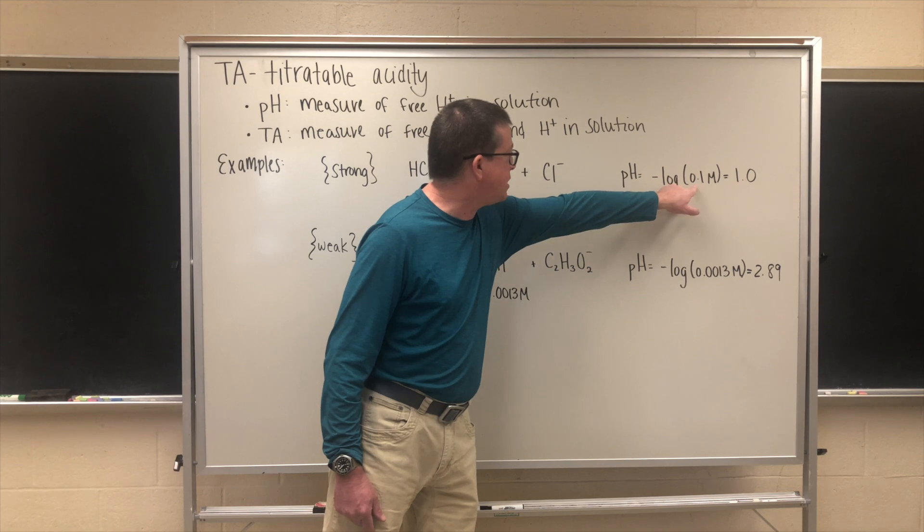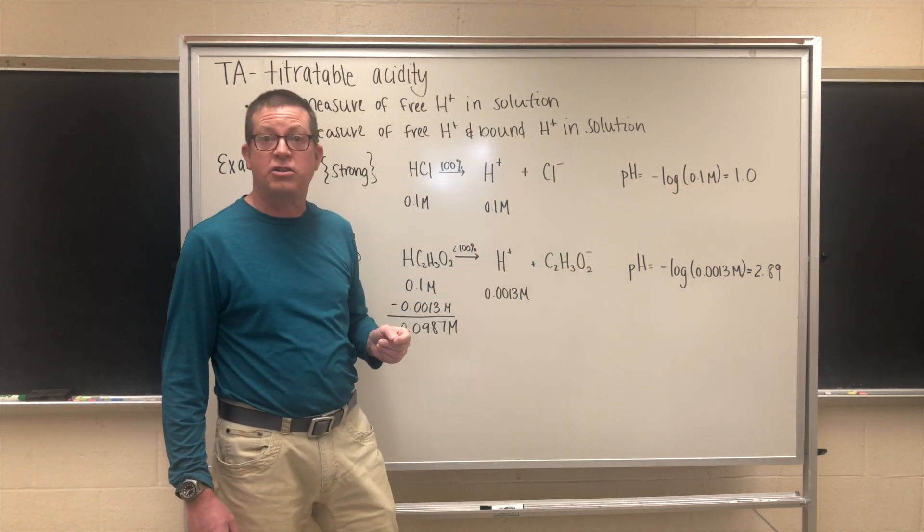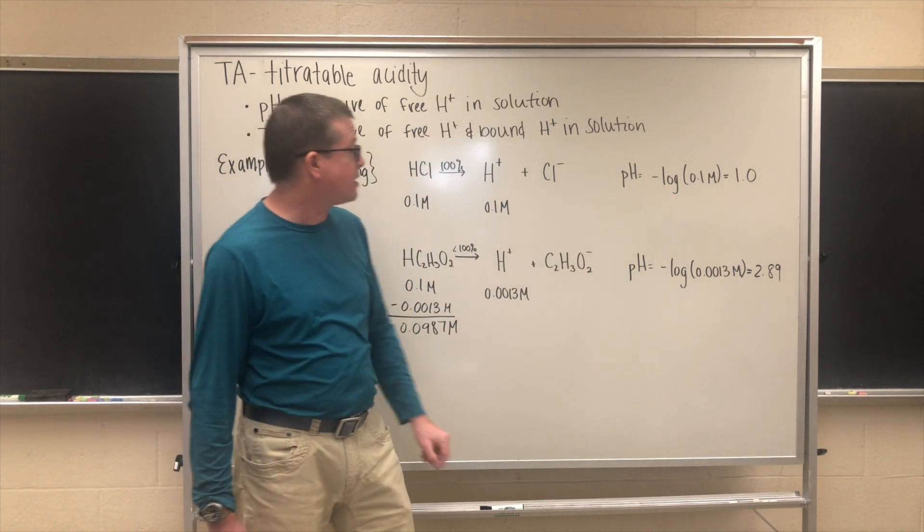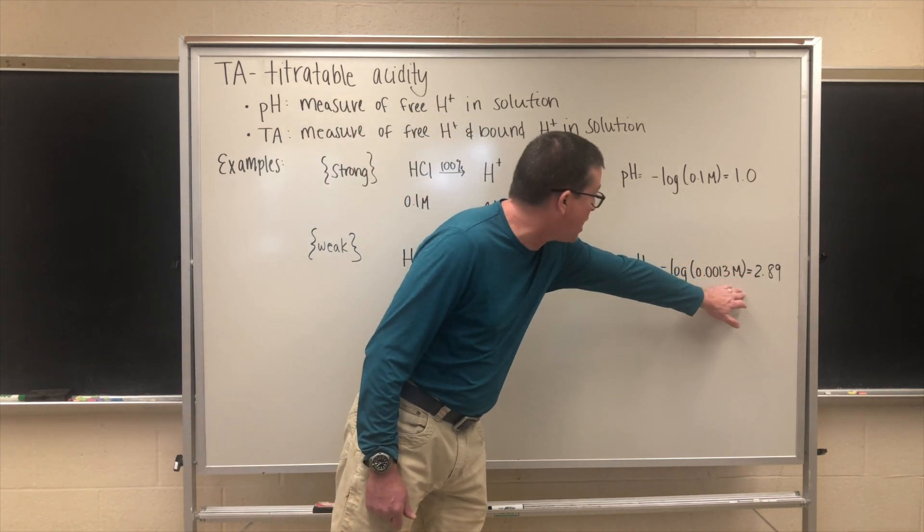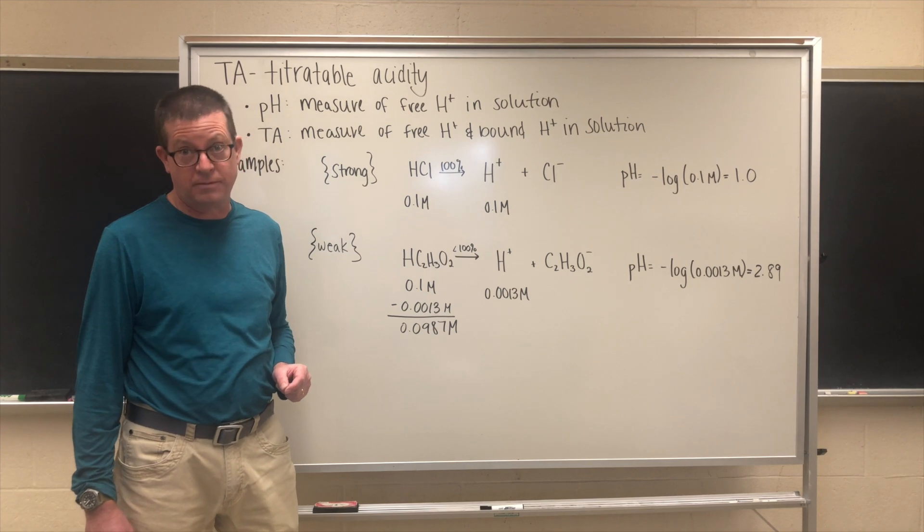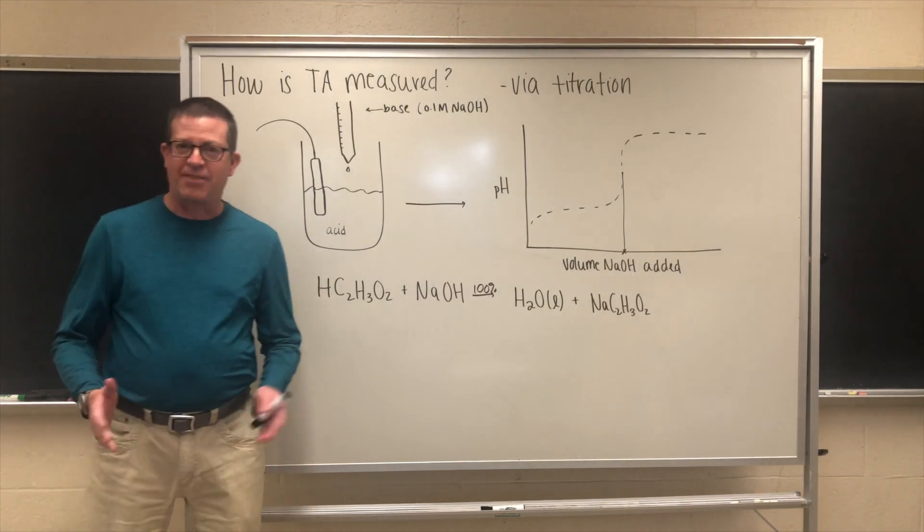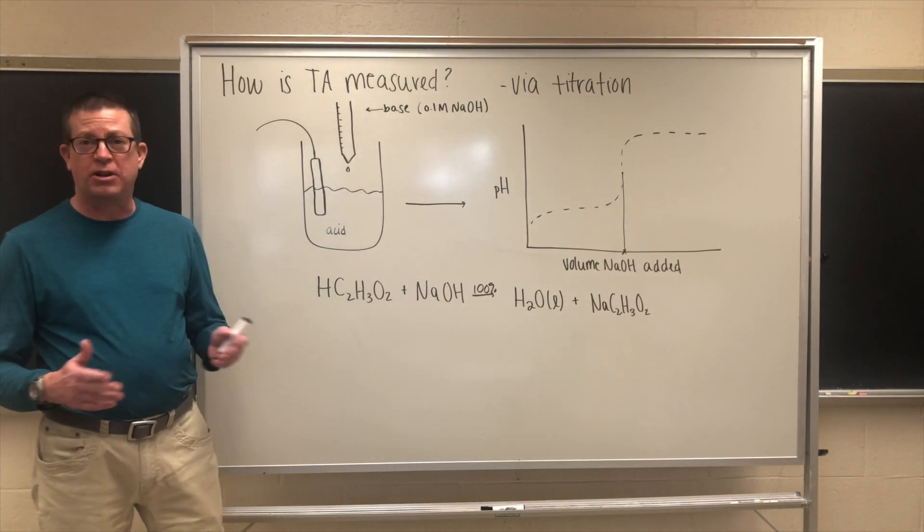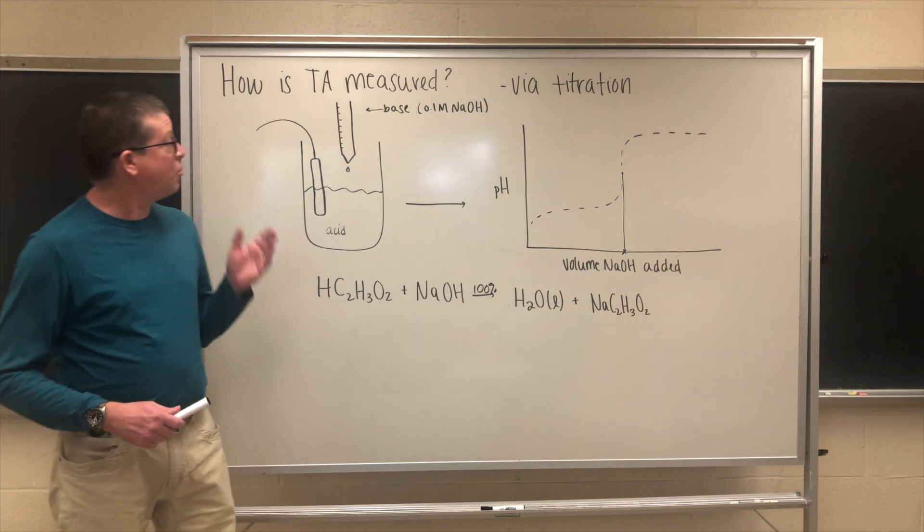What we notice here is that we have two acids of exactly the same starting concentration. In one case I get a pH of 1.0 with 100% dissociation, and with a weak acid like acetic acid the pH is considerably higher because I make much less hydrogen ion in solution.